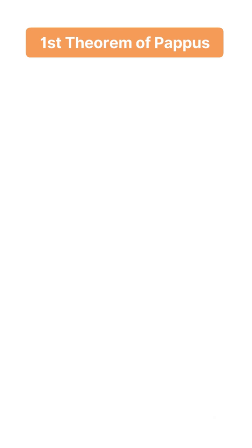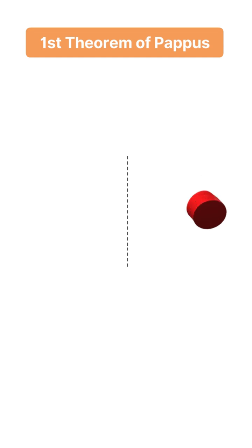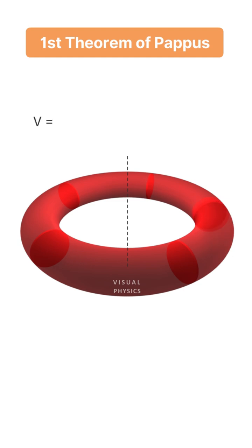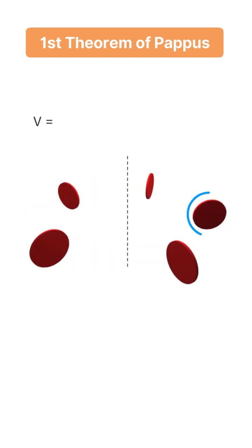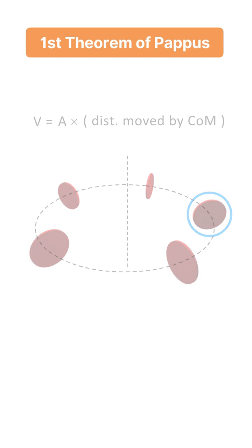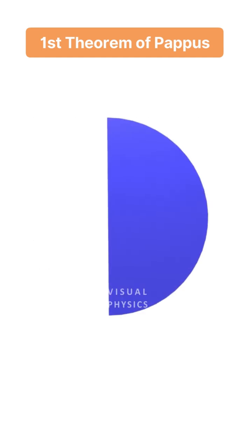The First Theorem of Pappus states that if a uniform plane region is revolved about a line that lies in its plane but does not pass through the region's interior, then the volume generated is equal to the product of the region's area and the distance travelled by its centre of mass. Let us use this theorem to find the centre of mass of a uniform semicircular disk.